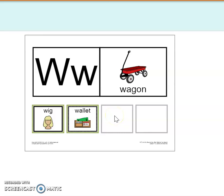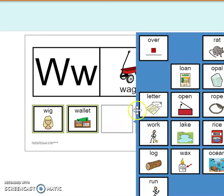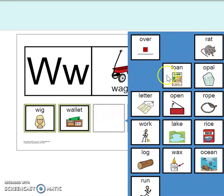Two more words. We can do this. Okay, we have loan. Let me move this over so you can see everything. Loan, L. Nope, that's not the W sound. Opal, opal. That's not the W sound.